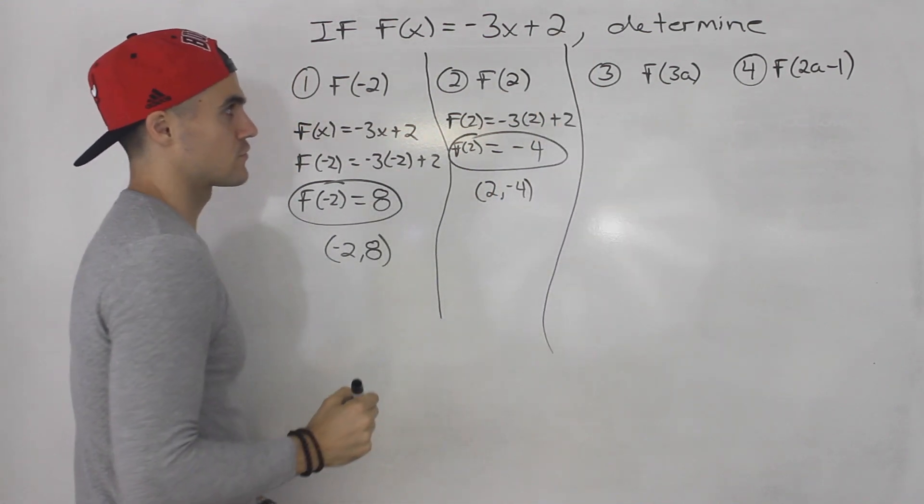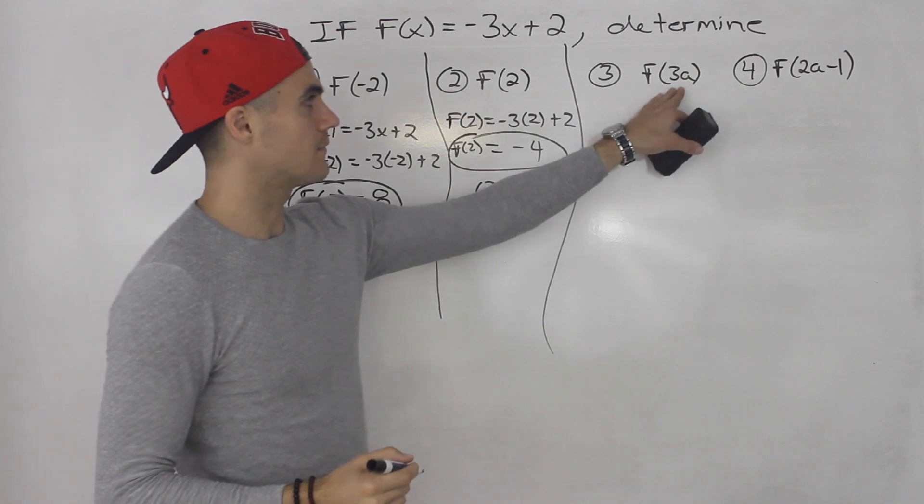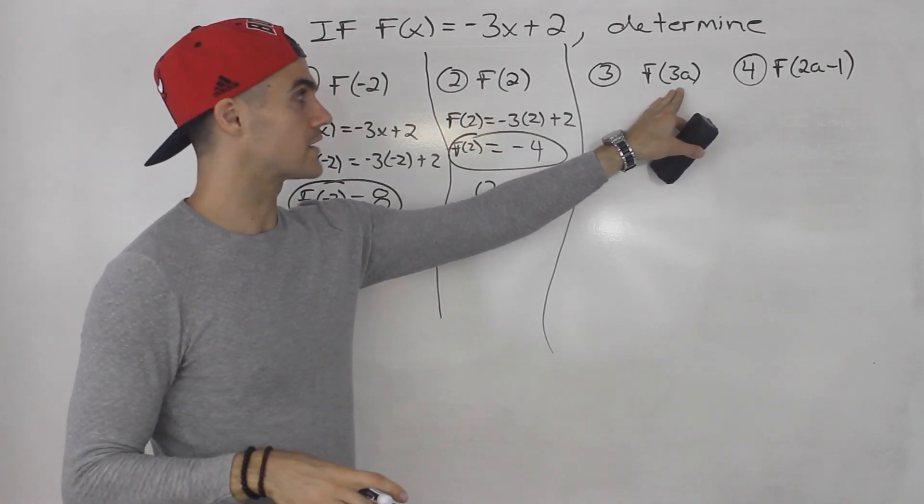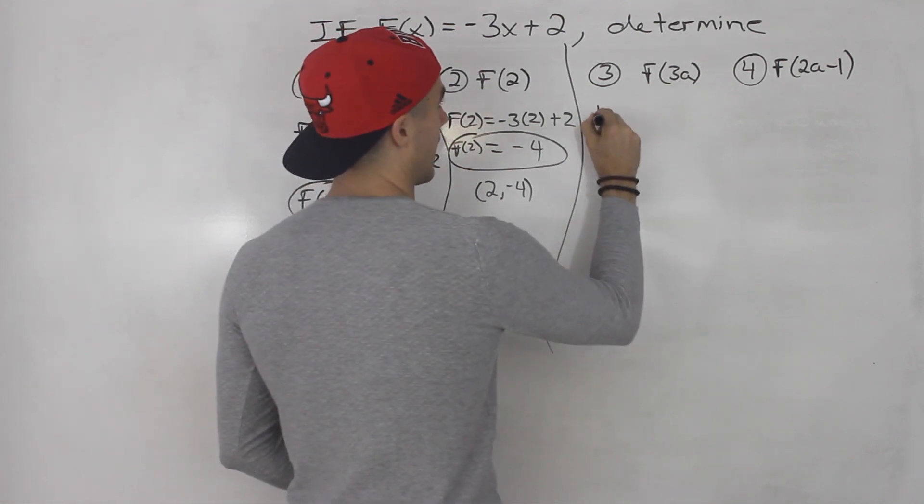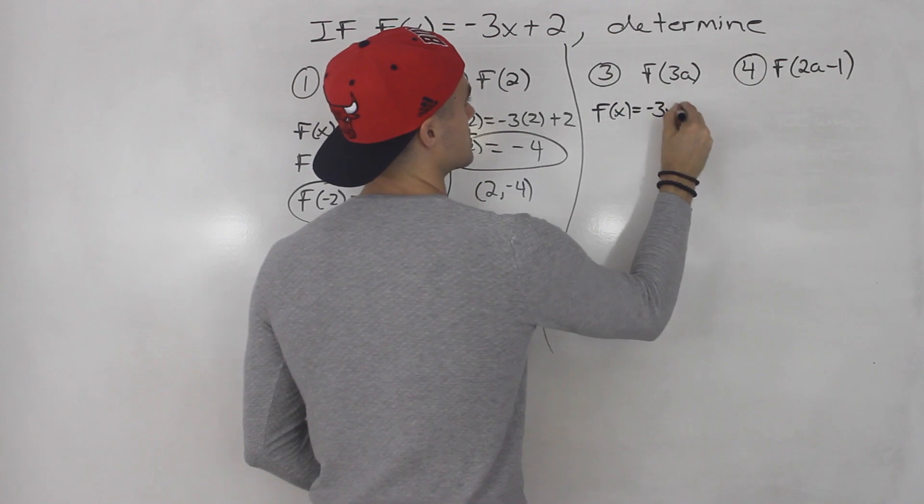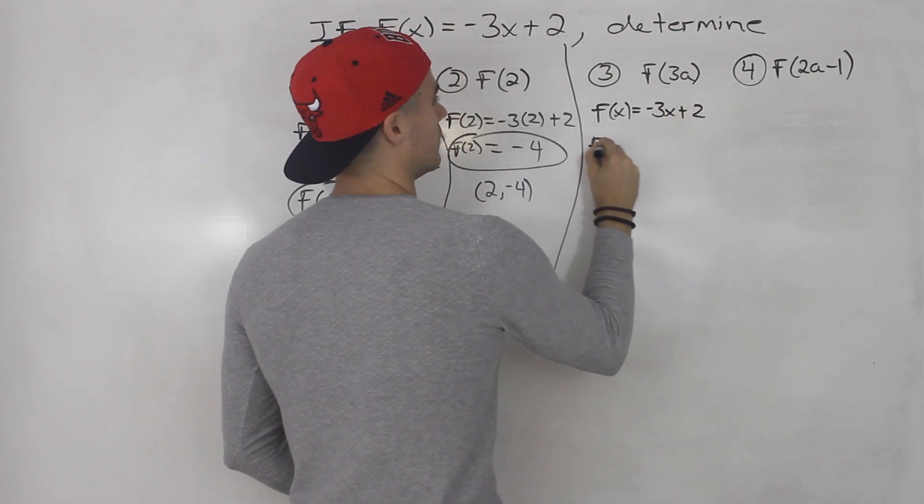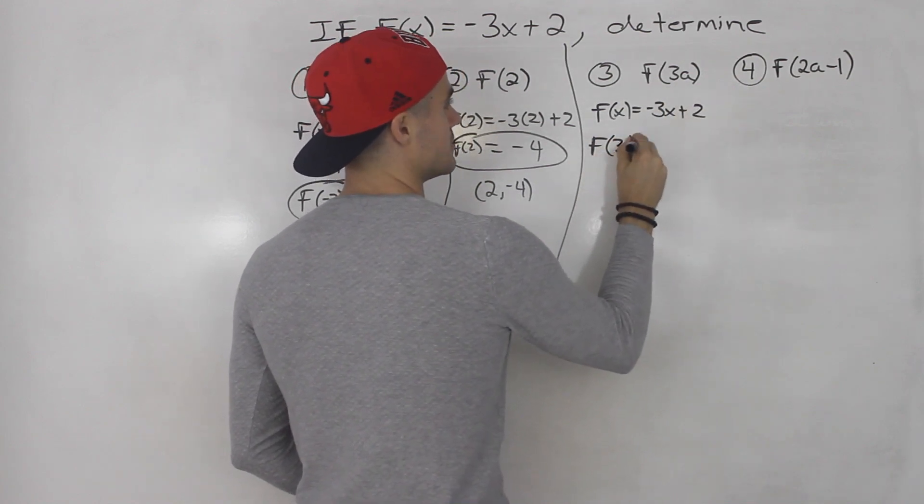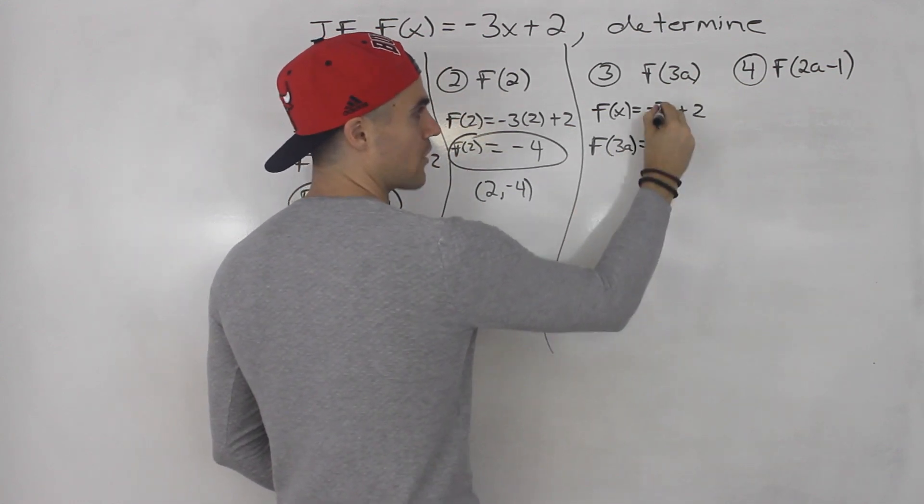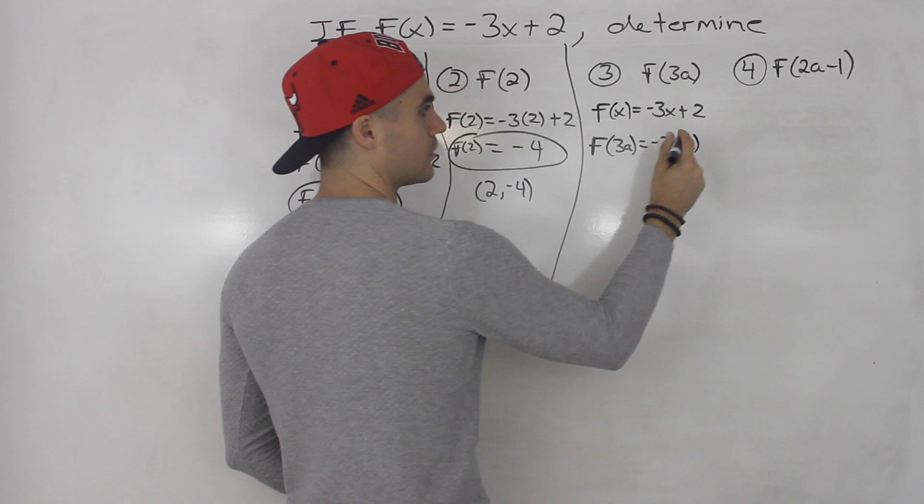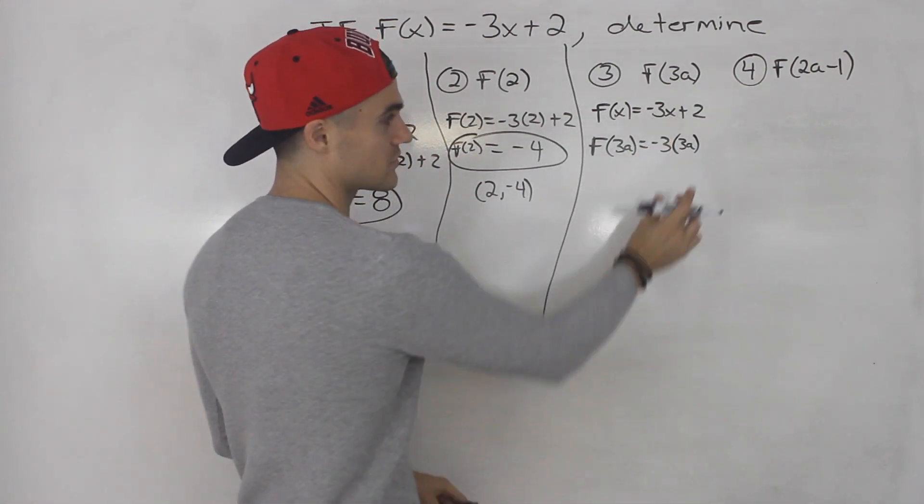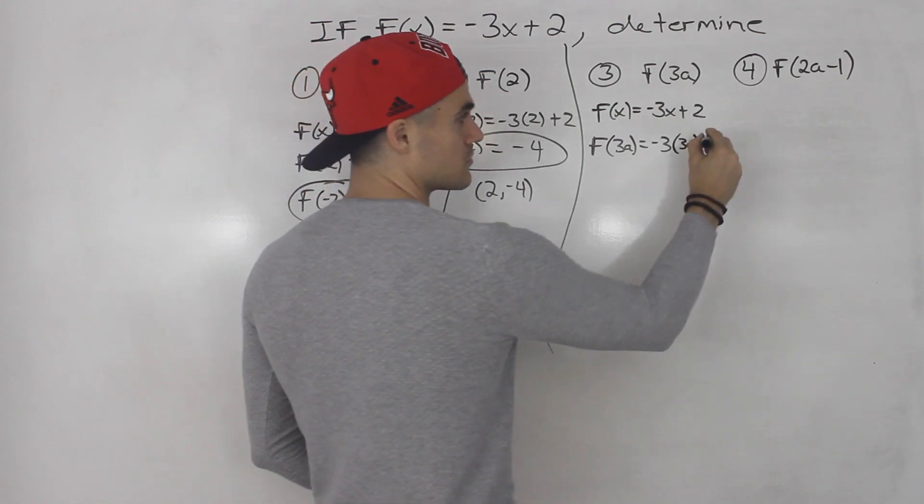Number 3, f of 3a. Notice here how we're not going to be plugging in just a number for x. We're going to be plugging in an expression. So f of x is negative 3x plus 2. Well, f of 3a, we would plug in this 3a in brackets for x. We have to plug in that whole expression for x, so we put it in brackets.